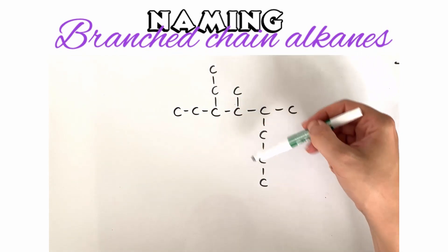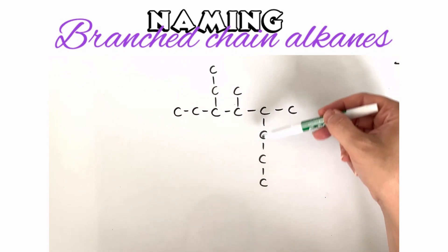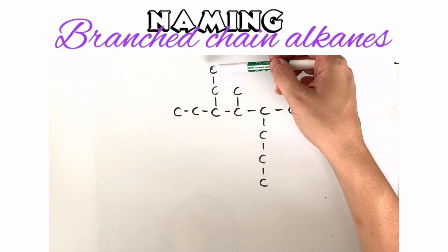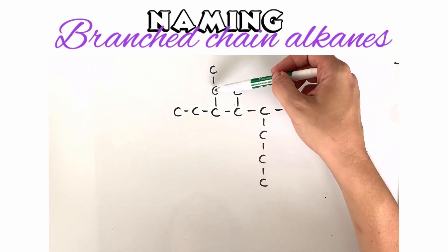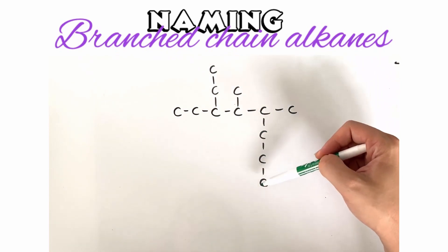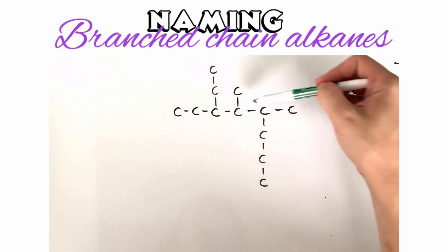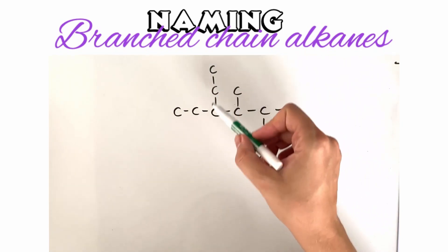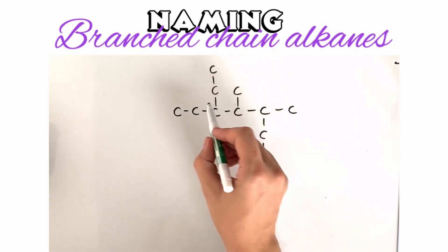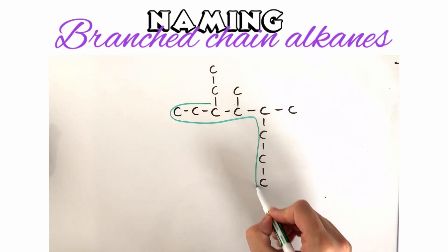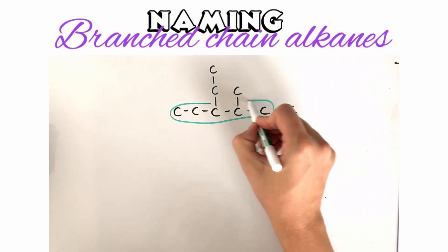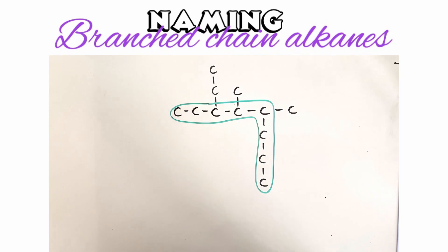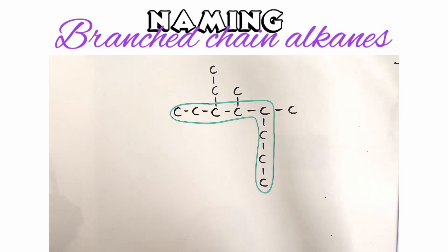We could also start from the other end: one, two, three, four, five, six, seven, eight — still eight. So it doesn't matter which of those you choose. I'll circle this chain, and that means the name of our molecule is going to end in octane.